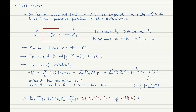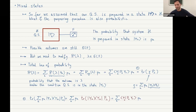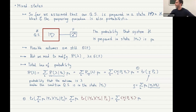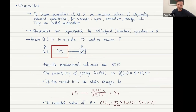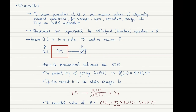Regarding time dependence: your state is evolving, and at some moment you perform a measurement. Immediately after the measurement, the state collapses to P_λ|ψ⟩ (normalized), and then free evolution resumes from this new starting point. The measurement makes the evolution discontinuous — something happens, and then the system starts evolving again from P_λ|ψ⟩.